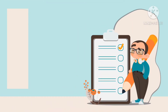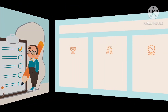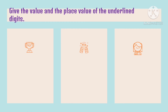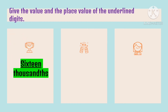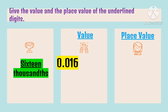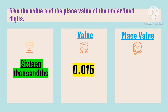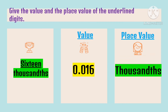To have mastery on identifying the place value and value of a given decimal number, let us try this activity. Give the value and the place value of the underlined digits. We have 16 thousandths — the underlined digit is 16. The value of 16 is 16 thousands, with zero as the place value holder for the tens place. Its place value is thousands.